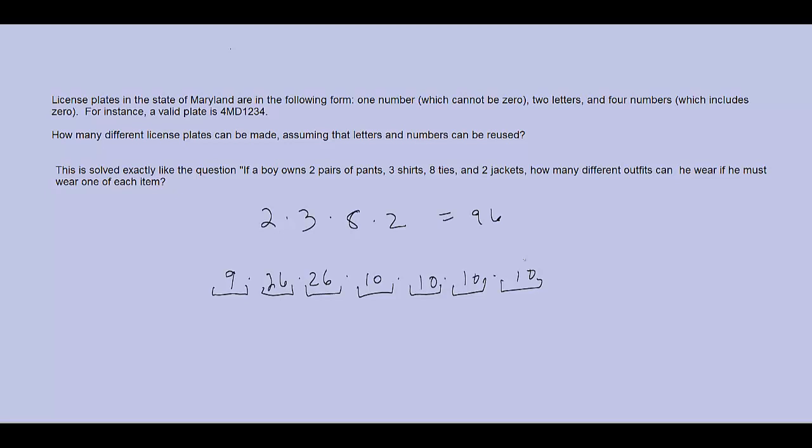Just like I did with the outfit, I'm going to multiply these numbers together. That's the fundamental principle of counting. So, nine times 26 times 26 times 10 times 10 times 10 is equal to an awfully big number, or over 60 million license plates.